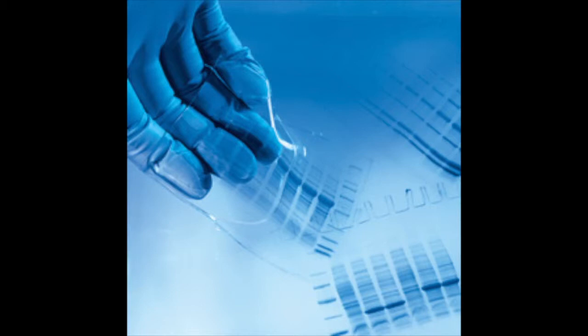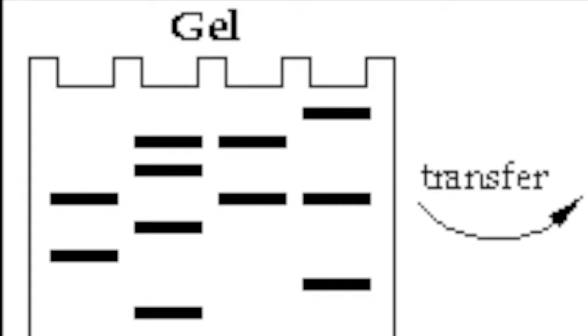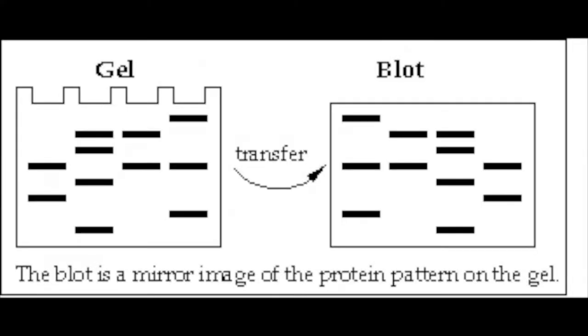Western blots and far western blots. Both techniques use gel electrophoresis to separate proteins in a sample. The proteins are then transferred to a membrane during the blotting step of the procedure. Specific proteins are then identified using a probe.